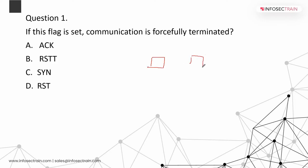Whenever we are making a communication, a SYN packet is required to build a connection. In response, the other side sends a SYN-ACK, and then an ACK. To build a communication, the SYN flag is required, and to close a communication forcefully, the RST (reset) flag is used. The RST flag will terminate the communication forcefully.